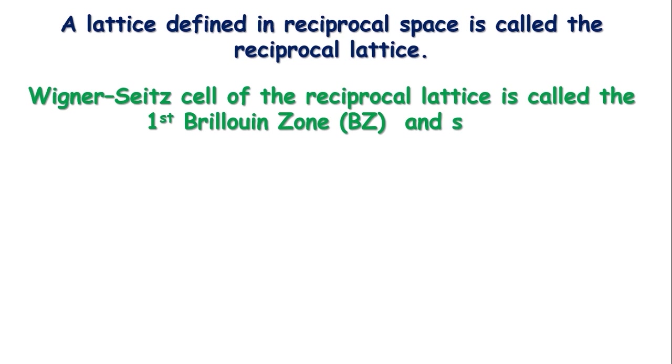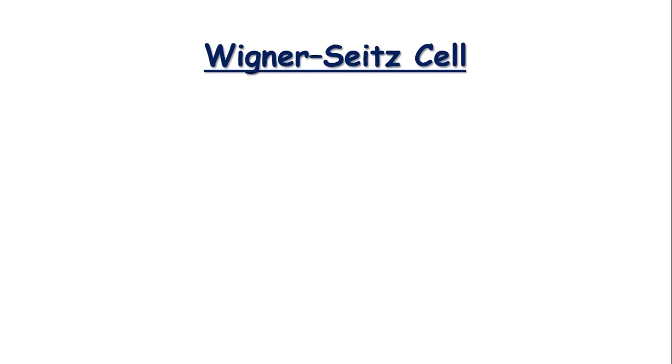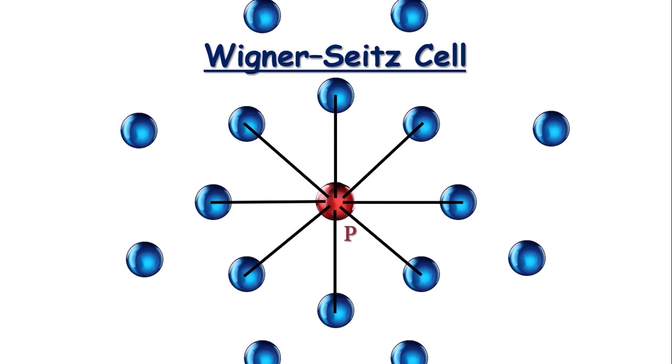Surely, you know about the Wigner-Seitz cell. Let's say you have a lattice point marked as P. We will connect only nearest neighbors from P. Now, by drawing perpendicular bisectors on each of these lines, we get the Wigner-Seitz cell. Okay. Look, the Coulomb potential inside a crystal is periodic.